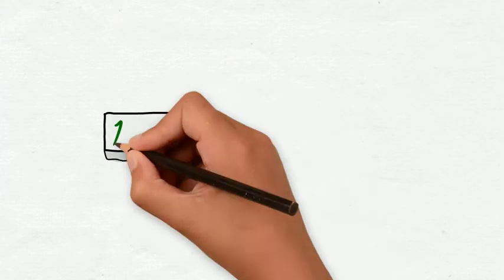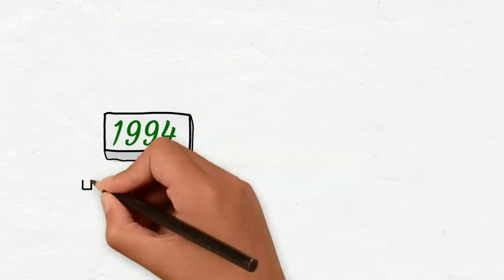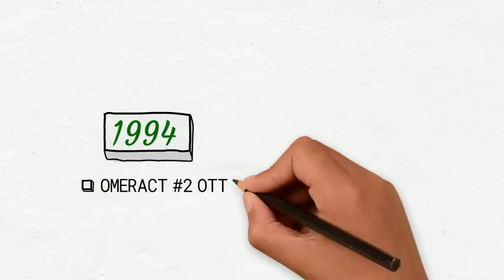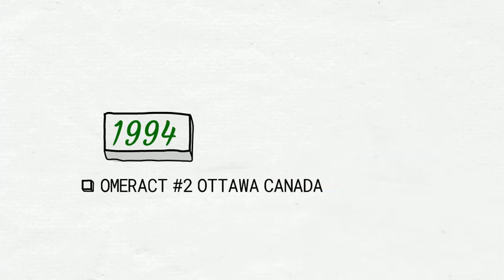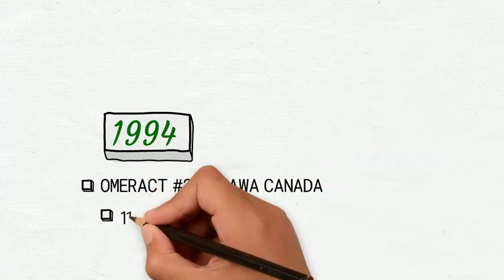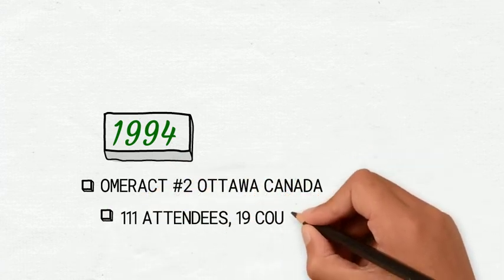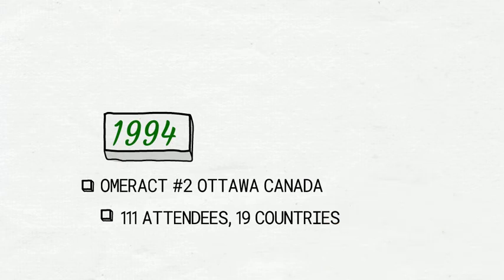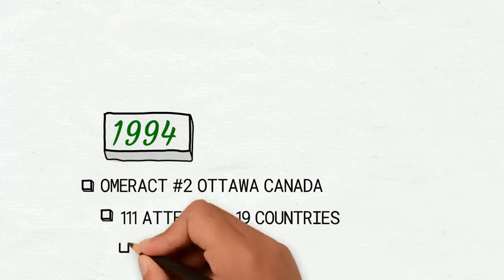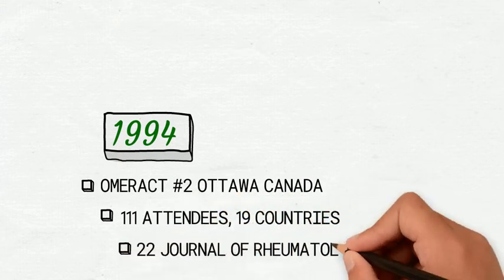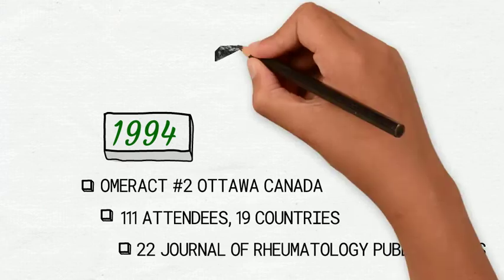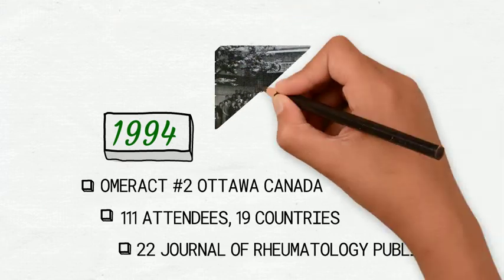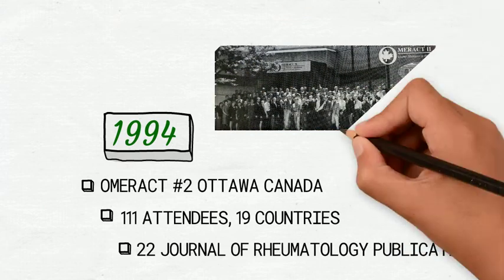OMERACT II, held in Ottawa, Canada in 1994, focused on the balance between efficacy of treatment and its cost. The conference was organized into three parts: toxicity, health status measurement, and economics. This resulted in three ILAR task forces that have produced recommendations in these areas.